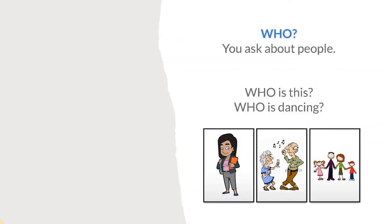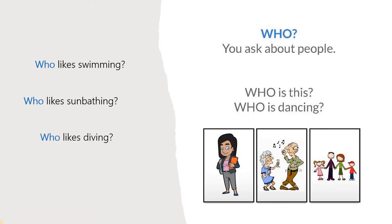We use the question word WHO to ask about people — we use it only when we refer to people. Who is this? Or who is dancing? Here are some questions for you: who in your family likes swimming? Who likes sunbathing? Or who likes diving? In my family, my sister likes sunbathing and my daughter likes diving. We use question word WHO to ask about people.